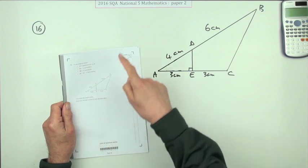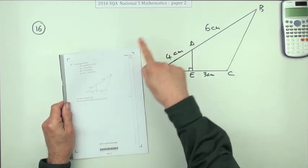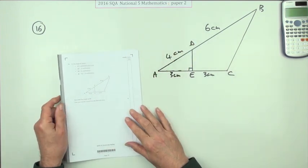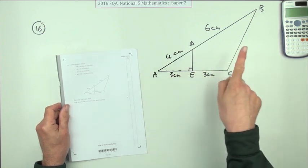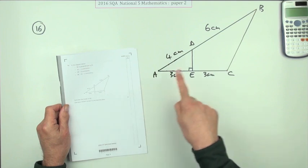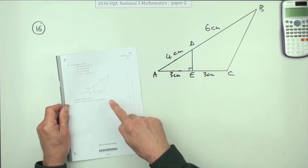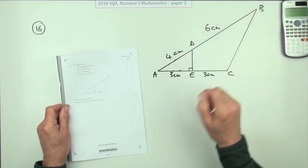Question 16 from paper 2, the last question in paper 2 of the 2016 National 5 exam. This is a triangles question with a scalene triangle that also looks a bit like similar triangles. There's a lot of information here in the diagram.